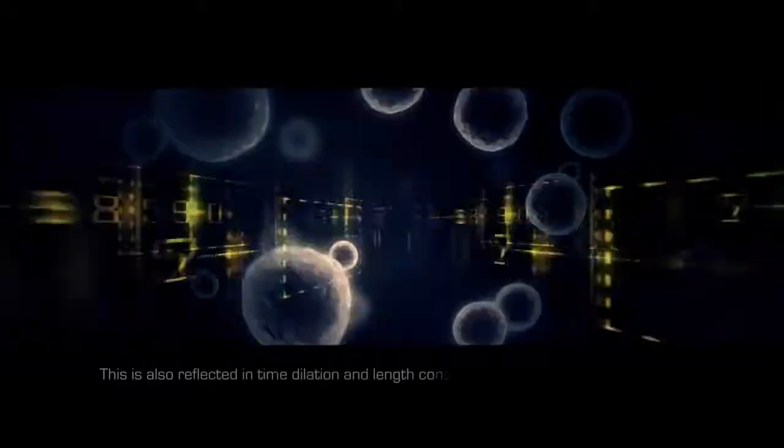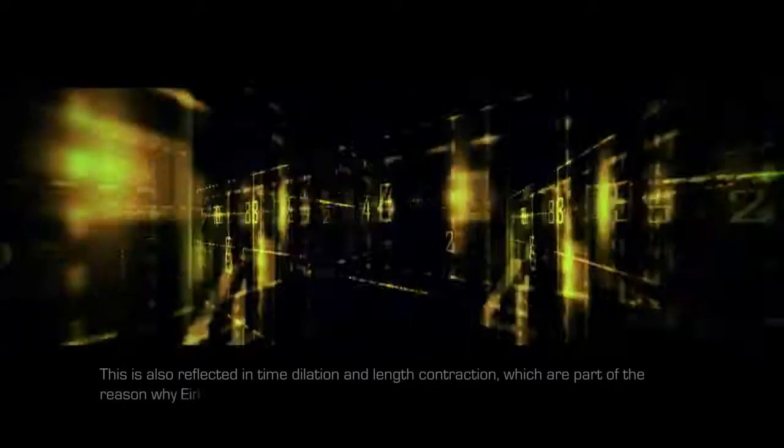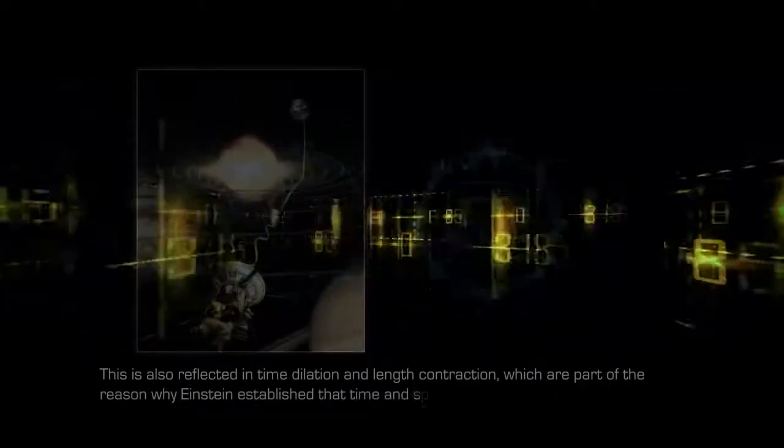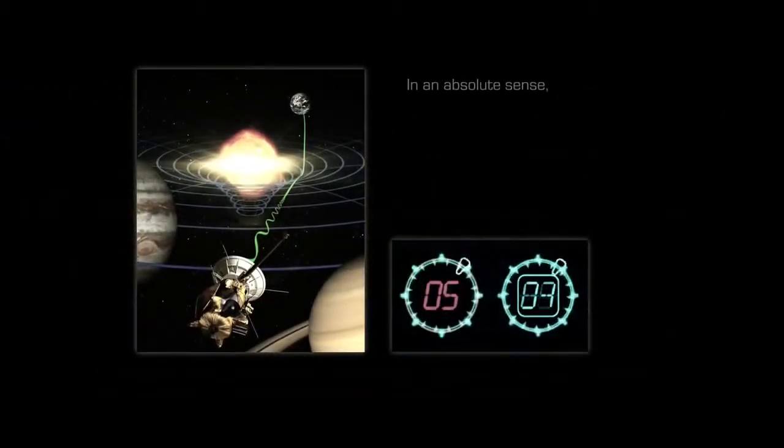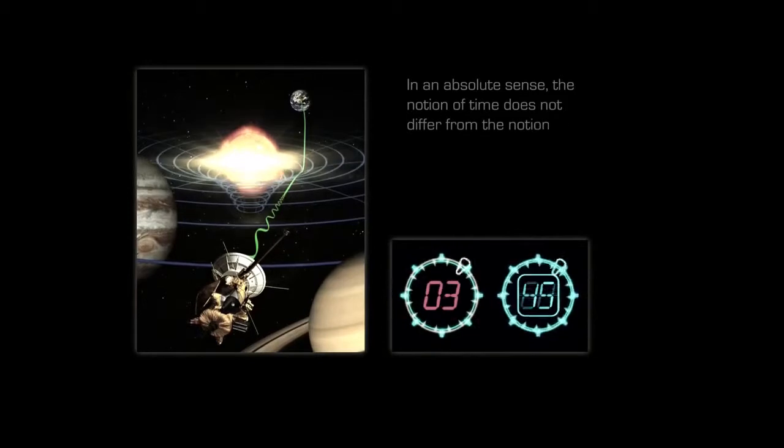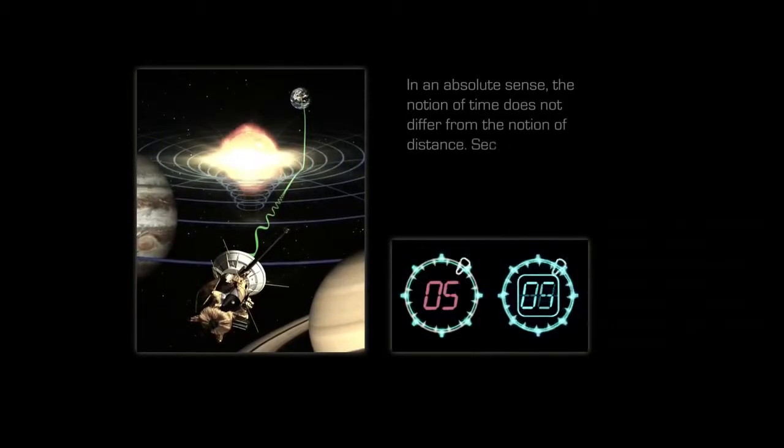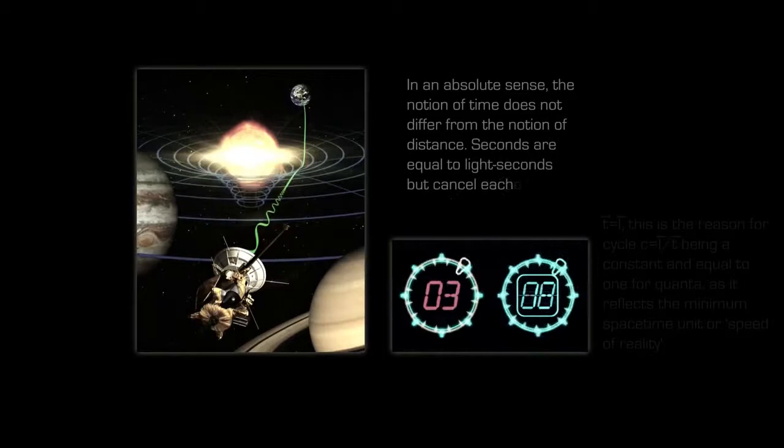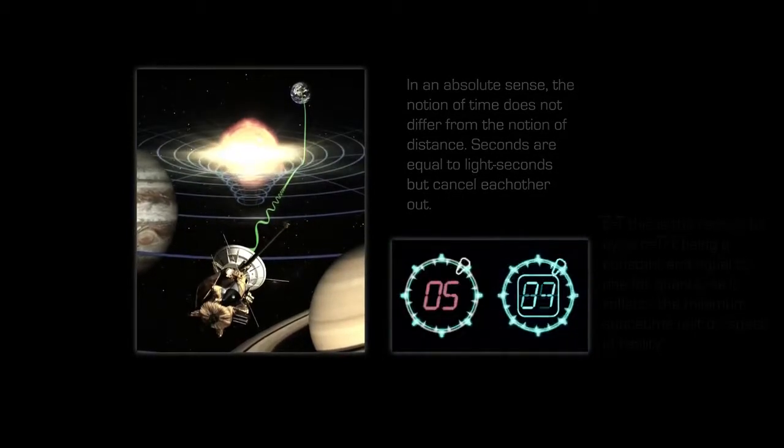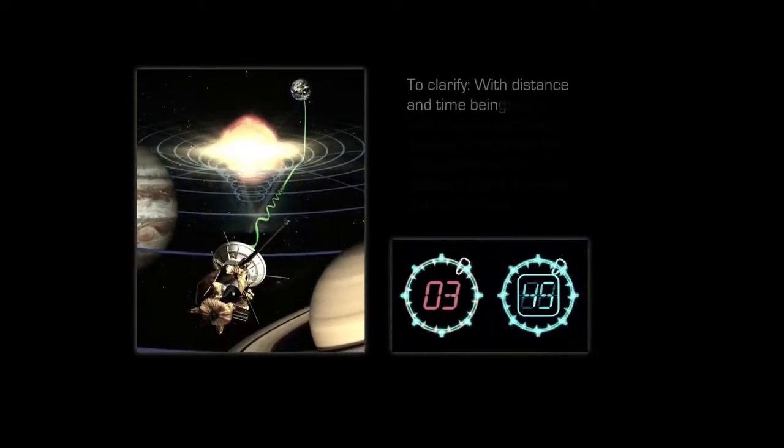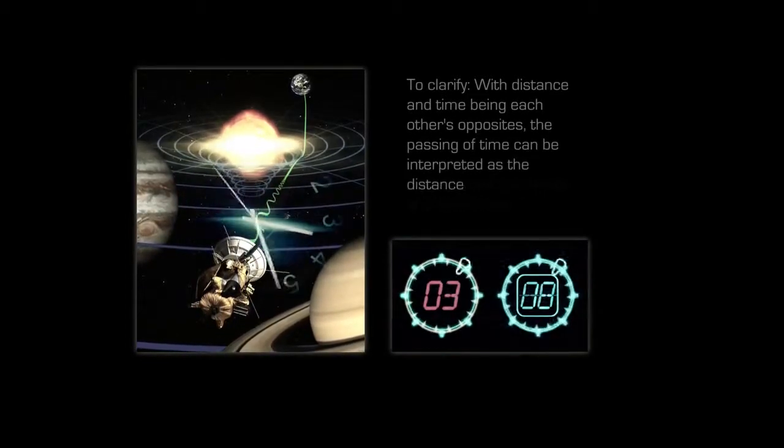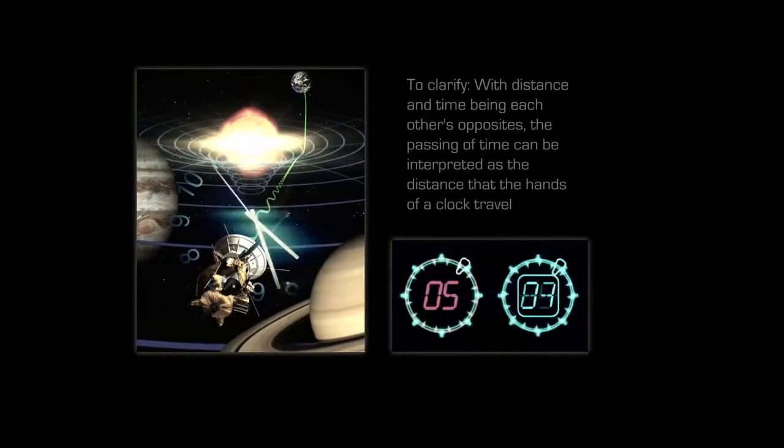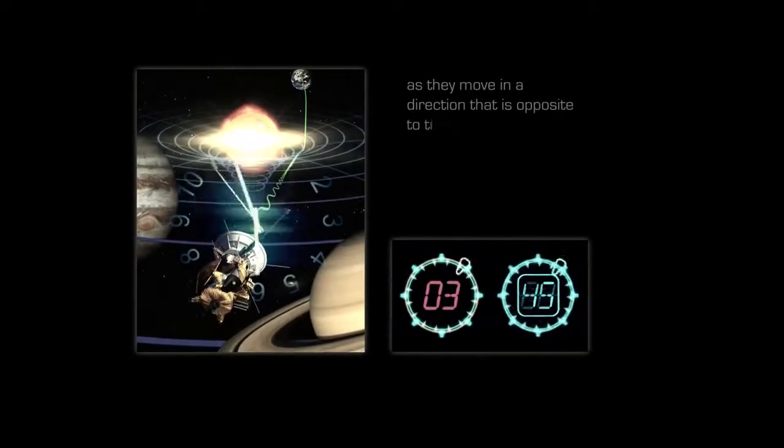This is also reflected in time dilation and length contraction, which are part of the reason why Einstein established that time and space are the same fabric. In an absolute sense, the notion of time does not differ from the notion of distance. Seconds are equal to light seconds but cancel each other out. To clarify, with distance and time being each other's opposites, the passing of time can be interpreted as the distance that the hands of a clock travel as they move in a direction that is opposite to time. As they move forward in distance, they effectively travel backwards in what we would call time.